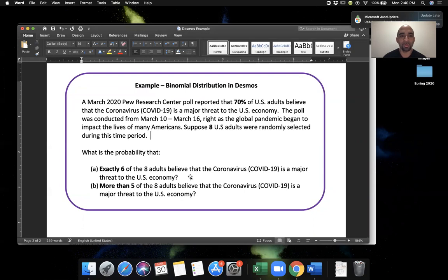This is a binomial experiment because we have a fixed number of trials. Each adult selected is a trial. The probability that the adult says yes, they believe the virus is a major threat is 70%. Therefore, the probability that an adult would say no, they don't think it's a major threat would be 30%. And we can determine the probability corresponding to the values of X, the random variable, the count going from zero through eight.